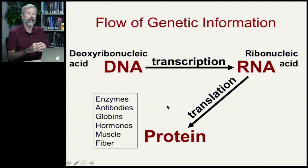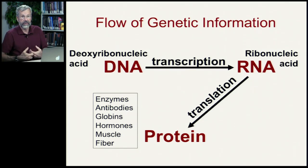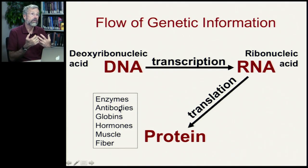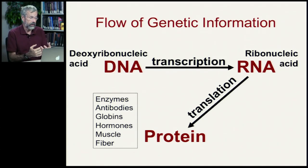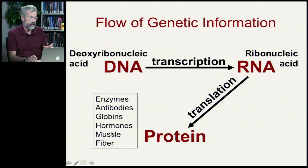Proteins do all kinds of things in our bodies. These are the enzymes involved with replication and transcription, as well as enzymes that digest our food. We have molecular defenses against infection produced by our immune system — those are called antibodies. There are other important proteins called globins, as well as the hormones that make men men and women women. Muscle tissue, fiber — just about everything you see in a body is made up of protein.